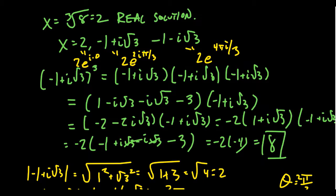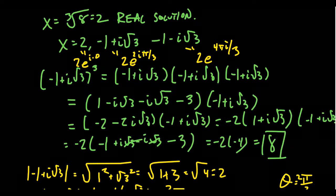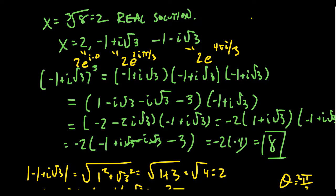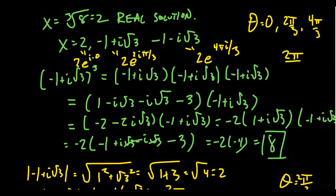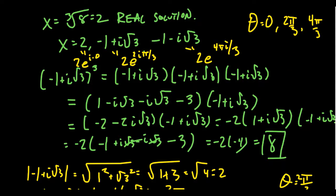Notice that when you look at these numbers in polar form, all their moduli are the same: 2, which is the real cube root of 8. Their angles are 0, 2π/3, and 4π/3 — each differing by 2π/3. If you added 2π/3 to the last one, you'd get back to 0. This is an arithmetic sequence adding 2π/3 repeatedly, and 2π/3 is just the standard period of sine and cosine divided by 3, because we're taking a cube root — a one-third power.